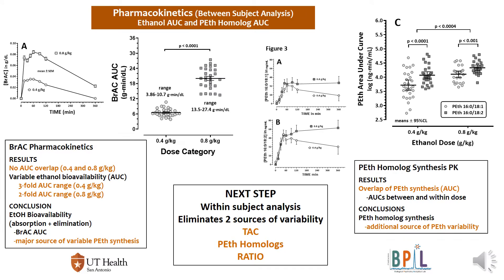This very complicated slide highlights two sources of variability that reduce the accuracy of PEth values to estimate recent alcohol consumption. There is significantly different bioavailability of ethanol and the rate of PEth synthesis among subjects. The two graphs on the left show a clear alcohol dose difference in the AUCs of ethanol on alcohol administration day. The range of AUCs was threefold at 0.4 g/kg and twofold at 0.8 g/kg. The two graphs on the right demonstrate considerable overlap of PEth homolog AUCs within and between doses for 18:1 versus 18:2.